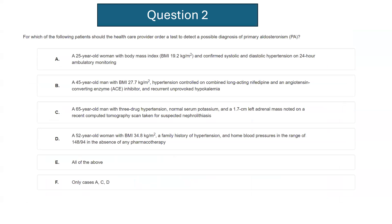For which of the following patients should the healthcare provider order a test to detect a possible diagnosis of primary aldosteronism? This is a very important question and one of the important updates in the 2025 Endocrine Society guidelines. Option A: a 25-year-old woman with BMI of 19 and confirmed systolic and diastolic hypertension on 24-hour ABPM. Option B: a 45-year-old man with BMI in the overweight range, hypertension controlled on combined long-acting nifedipine and an ACE inhibitor, with recurrent unprovoked hypokalemia.